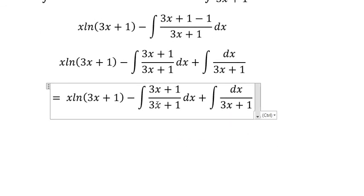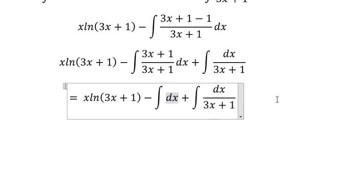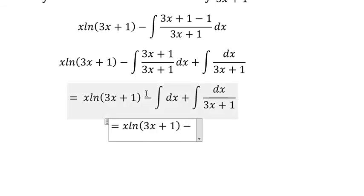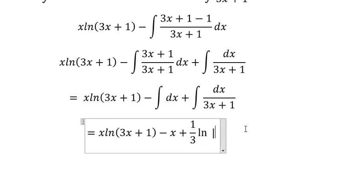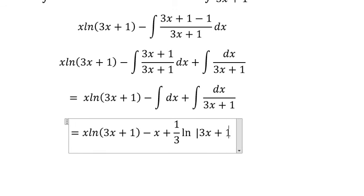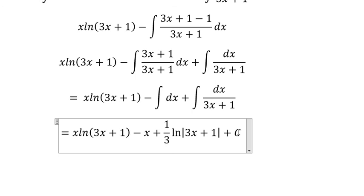3x+1 over 3x+1 gives 1. The integral of dx is x. The integral of dx over 3x+1 equals 1/3 times the logarithmic base e of the absolute value of 3x+1. So the final answer is x·ln(3x+1) - x + (1/3)ln|3x+1| + C, where C is the constant.